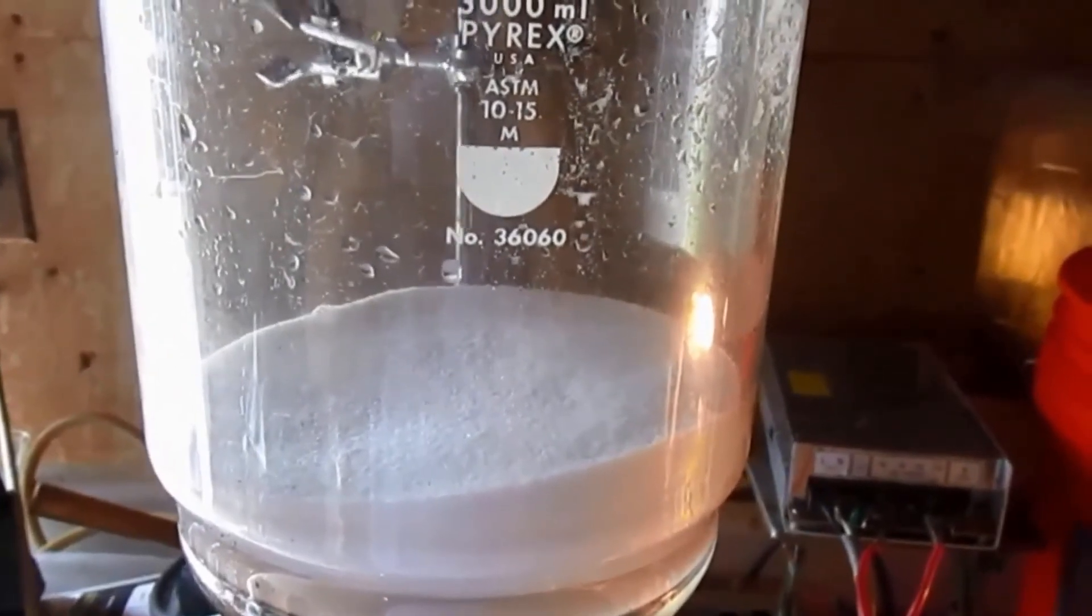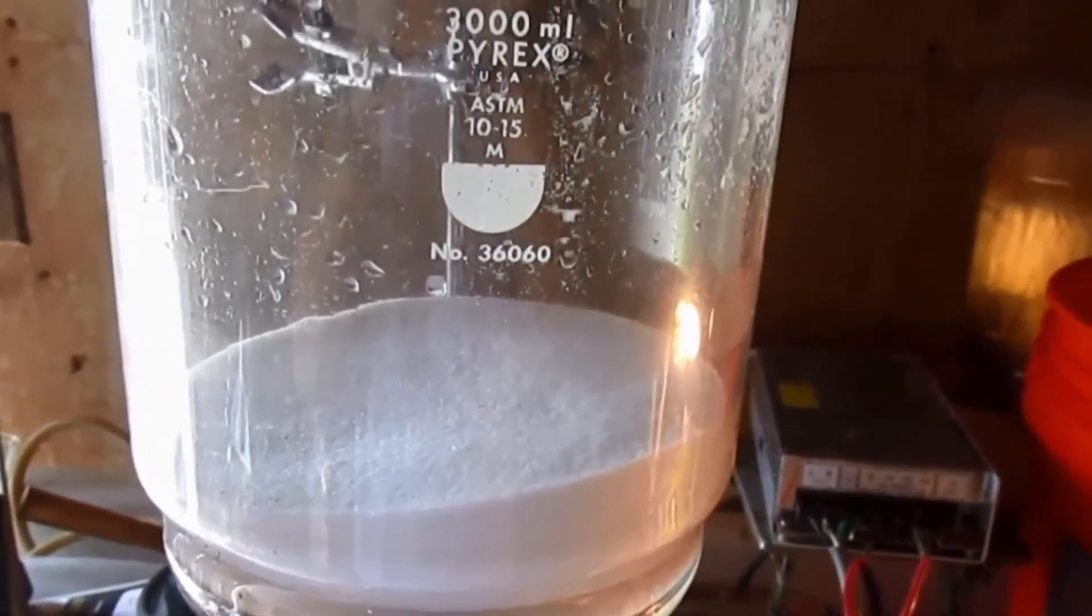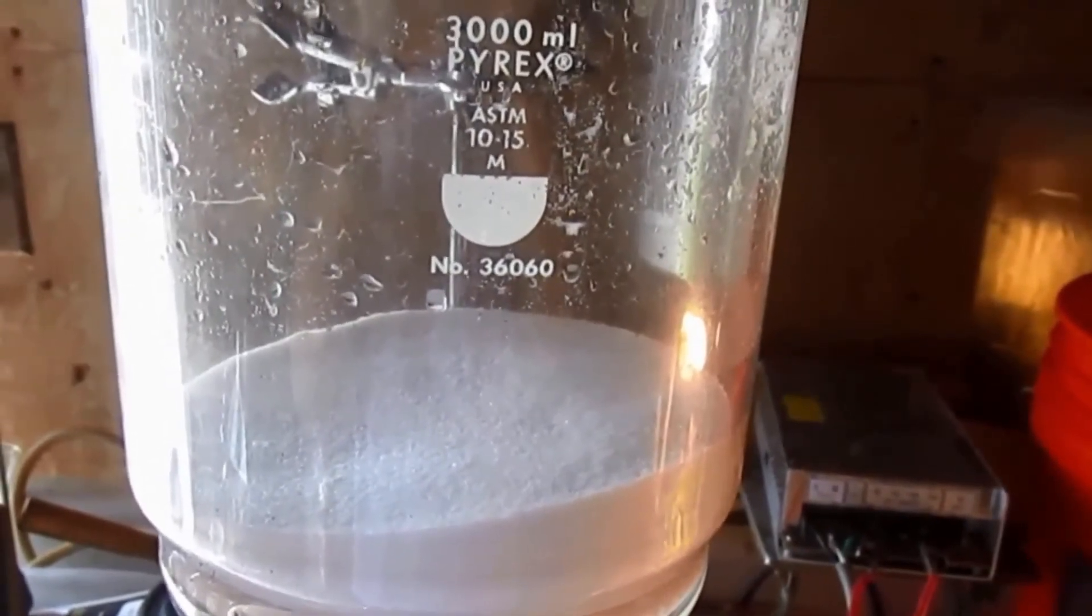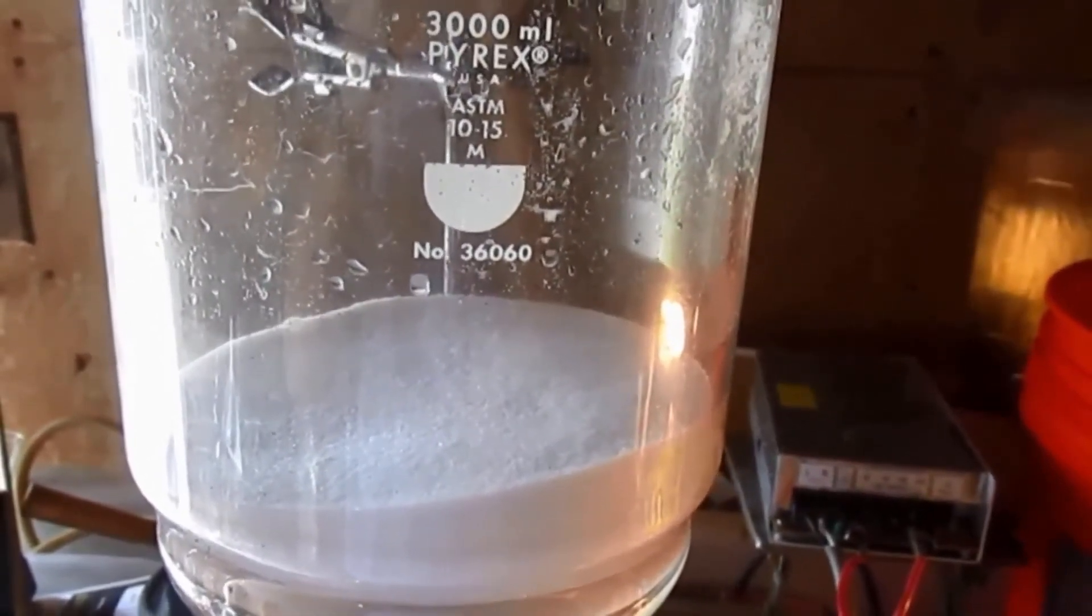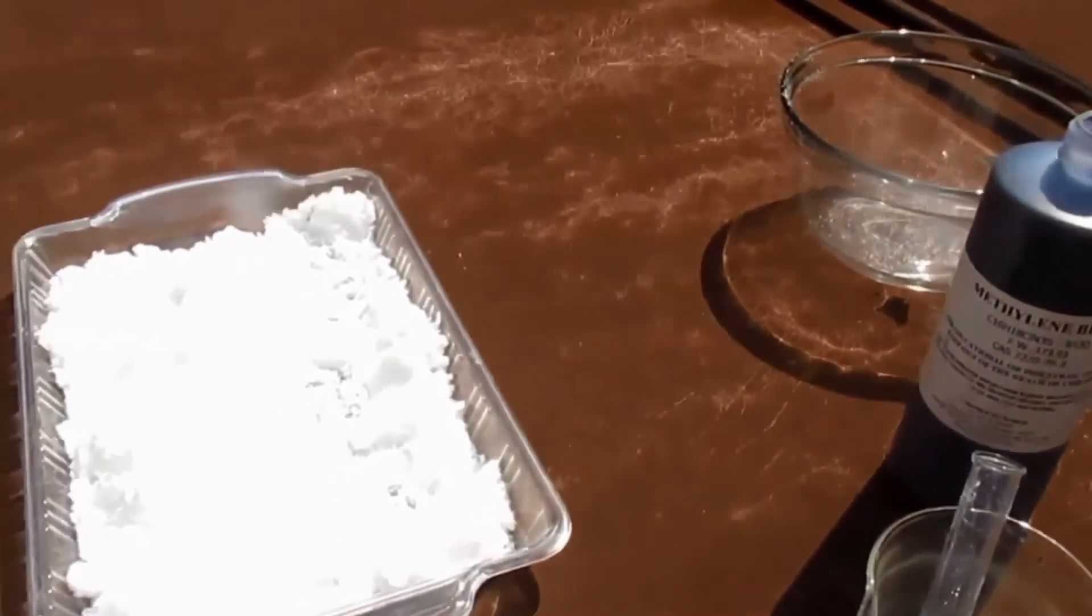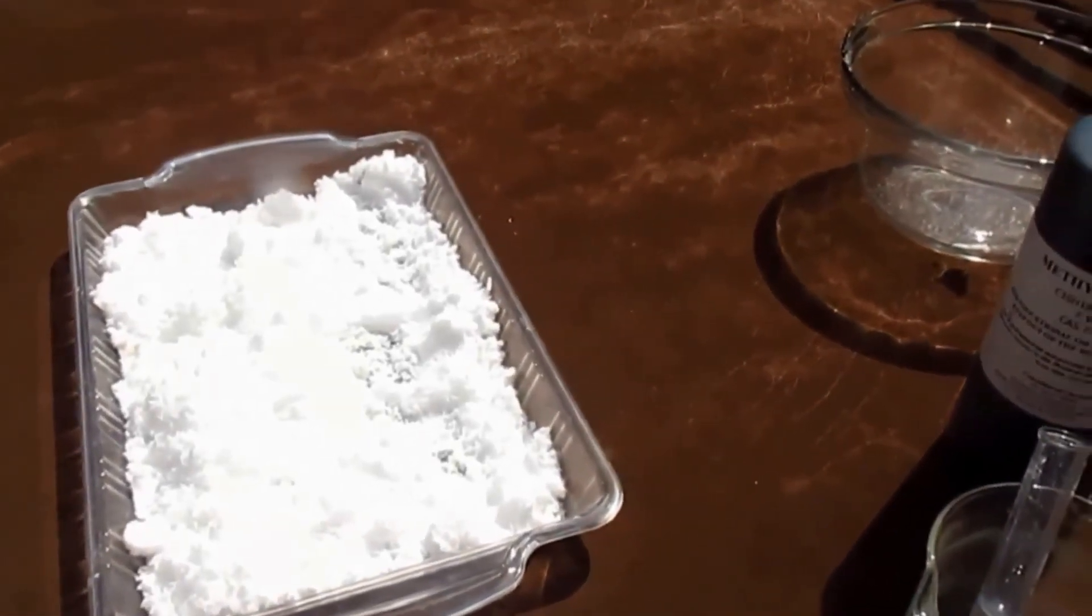The potassium perchlorate is now washed again with cold water to remove any residual potassium chloride. From vacuum drying and allowing it to dry in the sun, most of the water evaporated.